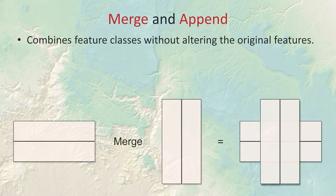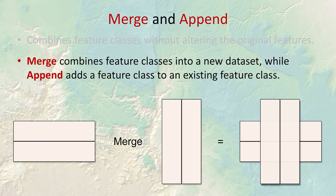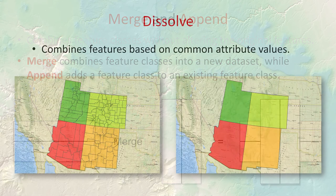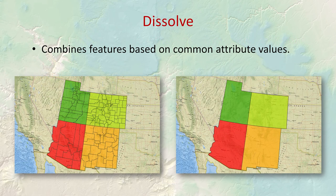The merge and append tools combine feature classes into a single feature class without modifying any geometries. Merge creates a brand new feature class, while append adds feature classes to an existing one — otherwise they're essentially the same tool. In practice, merge tends to be more reliable; the append tool can be prone to crashes.